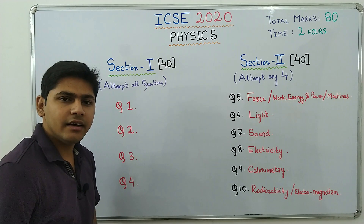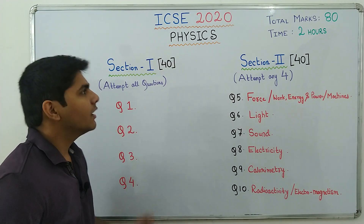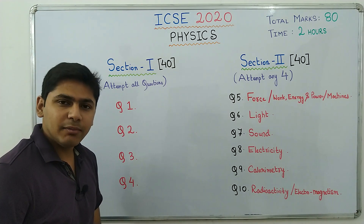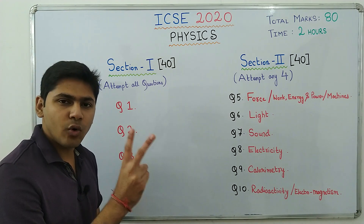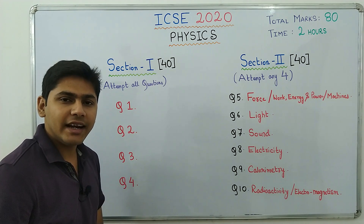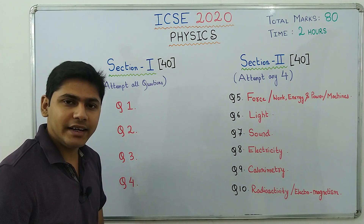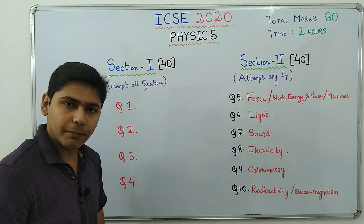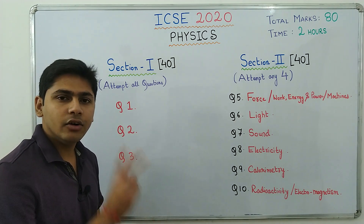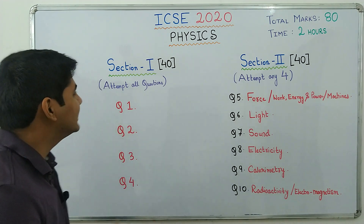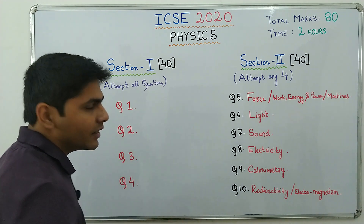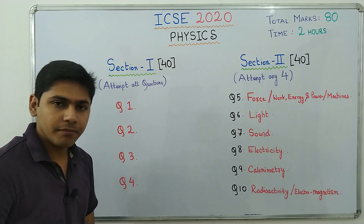Let's begin with the question paper pattern for ICSE physics. This is an 80 marks question paper and you will get two hours to solve the whole thing. You will also get an additional 15 minutes to read the question paper. The question paper is divided into two sections: Section 1 — 40 marks, and Section 2 — 40 marks.